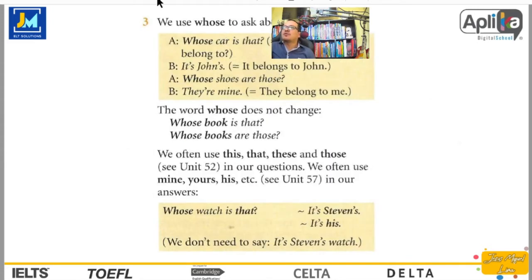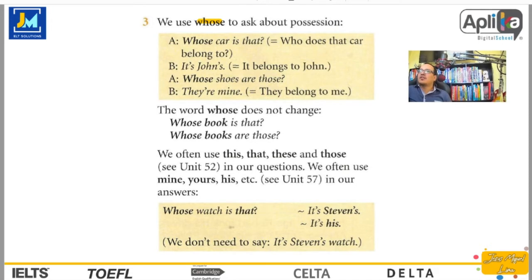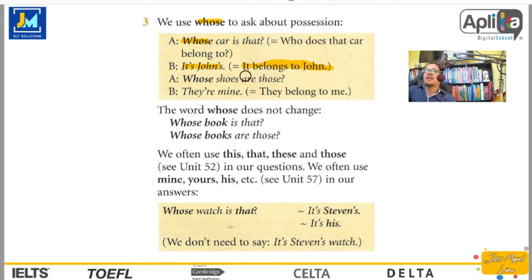Number three. Usamos una palabra llamada «whose» para preguntar acerca de posesión, cuando preguntamos si algo le pertenece a alguien. Por ejemplo: Whose car is that? — ¿De quién es ese auto? Who does that car belong to? — ¿A quién pertenece ese auto? It's John's — es de John. En otras palabras: it belongs to John — le pertenece a John.